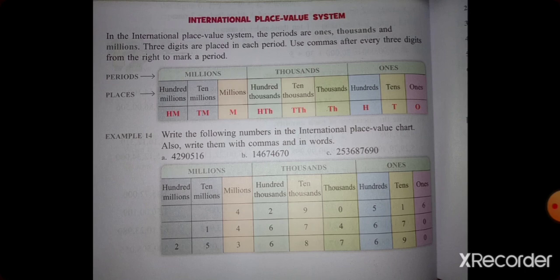Example 14: write the following numbers in the International Place Value Chart, and also write them with commas and in words. Before writing these numbers, you should draw a table with columns. First, make a period for Ones, Thousands, and Millions. In the Ones period write 3 places, in the Thousands period write 3 places, and in the Millions period again 3 places. Make columns of each period with 3 columns, then write the number.